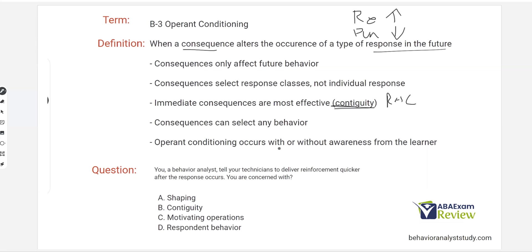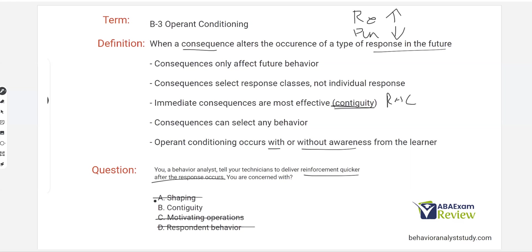Consequences can select any behavior, which is why it's important to be quick — when you deliver that consequence, it can reinforce or punish really any behavior that happened right before. Operant conditioning occurs with or without awareness from the learner; this is called automaticity of reinforcement. So as a behavior analyst, if you tell your technicians to deliver reinforcement quicker after the response occurs, you're concerned with contiguity — the immediate consequence is most effective — not shaping, motivating operations, or antecedents.